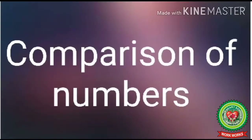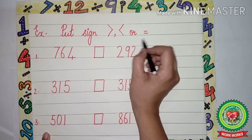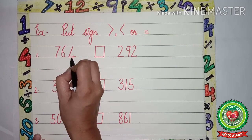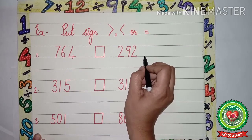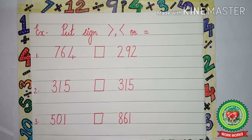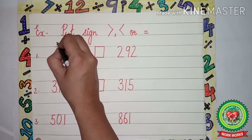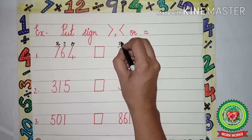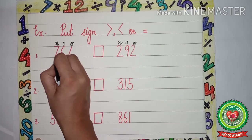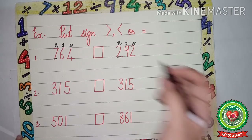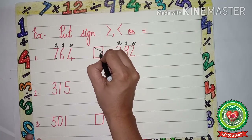Now let us compare the numbers. Put the sign greater than or equals to. We have to put the sign on whichever is the greatest. Number 1: 764 and 292. Our first step is to write down the place value chart. We underline the first digit: 7 and 2. Which one is the greatest? 7. It means 764 is the greatest number, so we will put the greater than sign on this side.